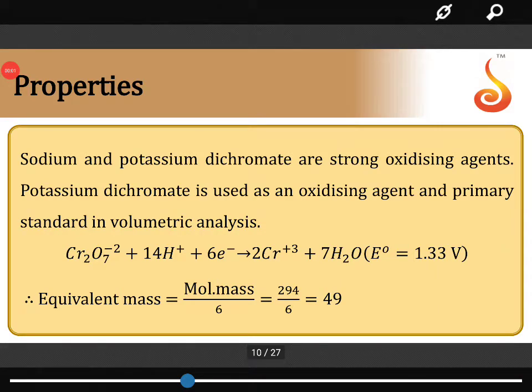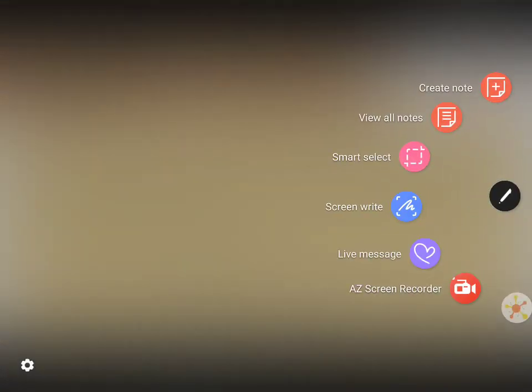Continuing this concept, dichromate is an oxidizing agent. We shall discuss the calculation of molar mass of oxidizing agents. It's very important.